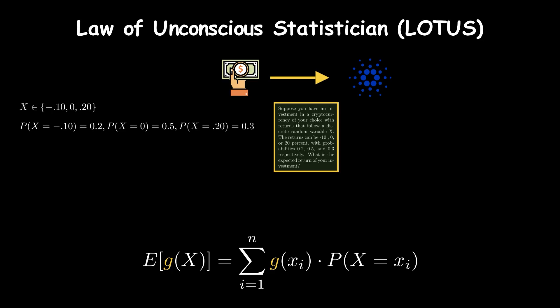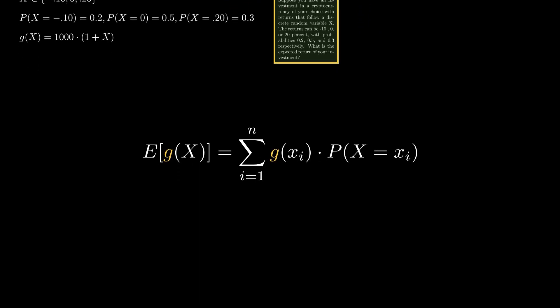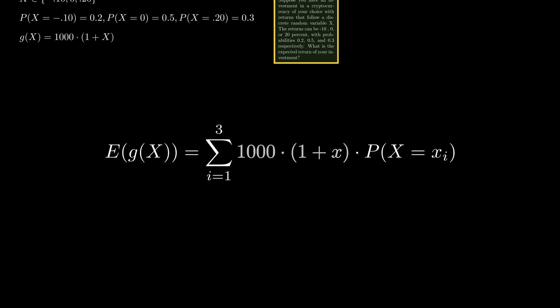Finally, we are also provided with the function g(X) which is the return on investment if you invest $1000. Now, we can get back to the LOTUS formula to calculate the expected return of your investment. First, we will substitute the function g(X) into the LOTUS formula.